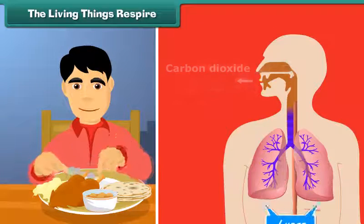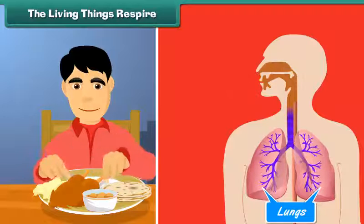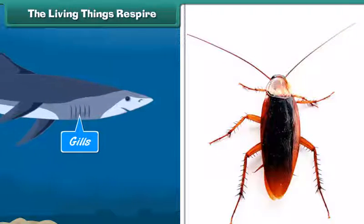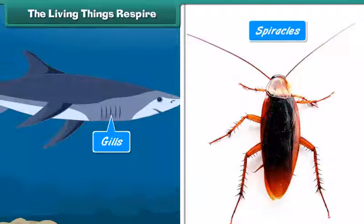Human beings have lungs for respiration. Fishes have gills and cockroaches have spiracles.